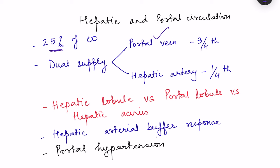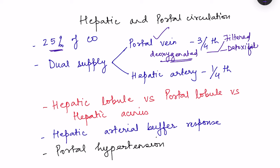This is the venous supply, which basically contains most of the deoxygenated blood, but it must enter the liver because the blood here undergoes processing — filtering and detoxification, since it is coming from the intestine. There is also nutrient metabolism. The second blood supply is via the hepatic artery, which provides oxygenated blood and is responsible for one-fourth of the blood supply to the liver.